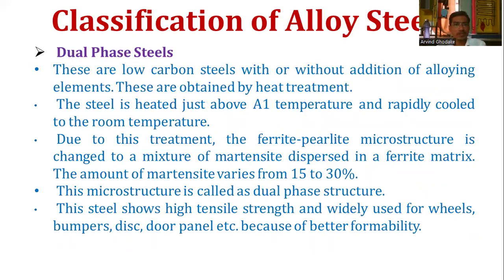The next type is dual-phase steel. These are low carbon steels with or without addition of alloying elements, obtained by heat treatment. The steel is heated just above the A1 temperature and rapidly cooled to room temperature. Due to this treatment, the ferrite-pearlite microstructure changes to a mixture of martensite dispersed in a ferrite matrix, with the amount of martensite varying from 15 to 30 percent. This microstructure is called the dual-phase structure. This steel shows high tensile strength and is widely used for wheels, bumpers, disc door panels, etc., due to their better formability.